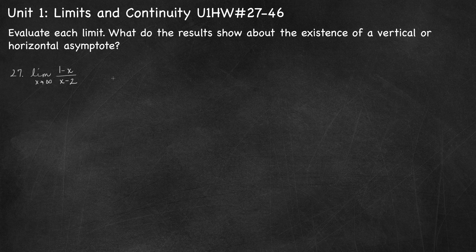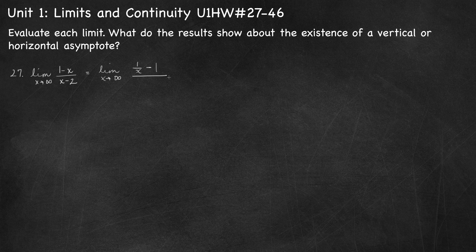Number 27, we want the limit as x approaches infinity of 1 minus x over x minus 2. I'm going to start this one the long way and then we can talk about the shortcut. I'm going to rewrite this rational expression by dividing each term by the highest power of x. The highest power of x is just x, or x to the power of 1.